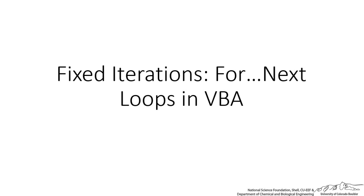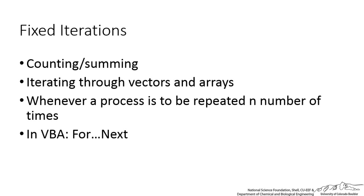In this screencast, I'm going to be going over the For Next loop in VBA. This is for fixed iterations. For Next loops are used a lot when we are counting, summing, or iterating through vectors and arrays, or whenever a process is to be repeated n number of times — where n is a fixed number. In VBA, this is known as For Next.